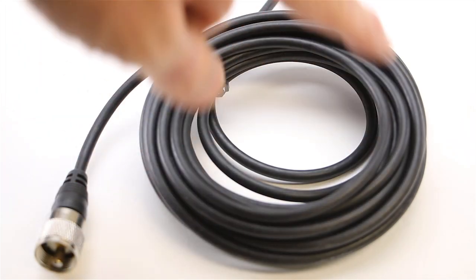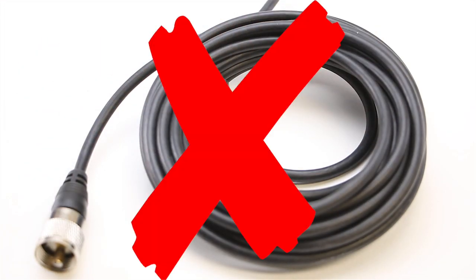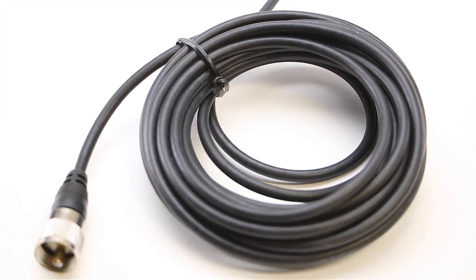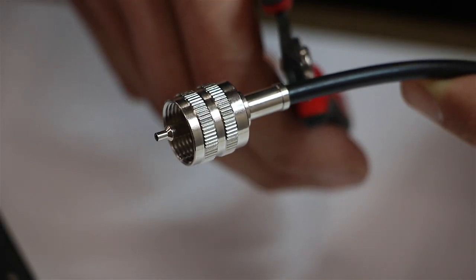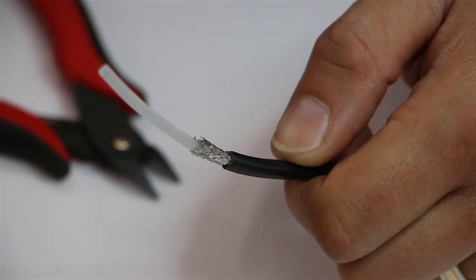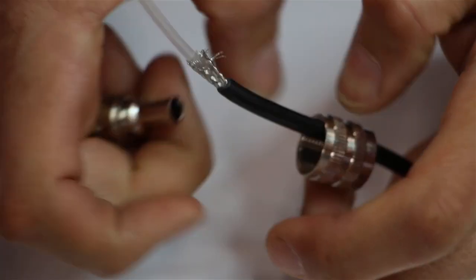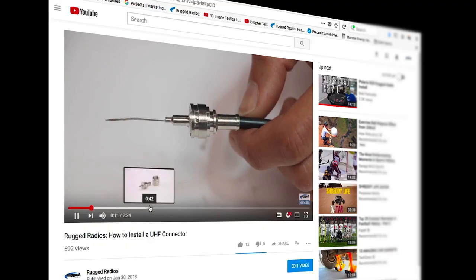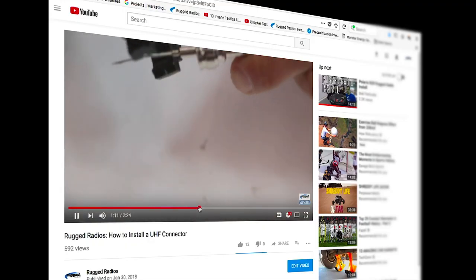First, make sure you have no excess coax cable coiled up. Coiled antenna cable is a performance killer and is often the number one problem for radio performance. It's always ideal to cut your coax cable to length and reattach a connector. We even offer another tech tip video online on how to install a coax connector.